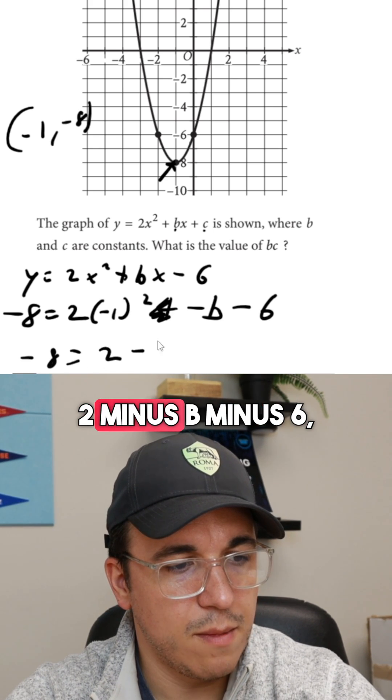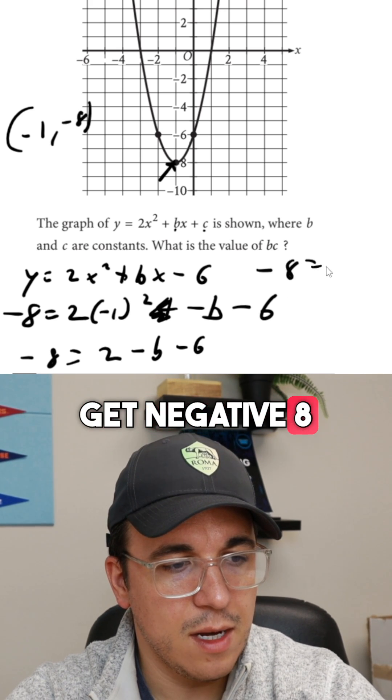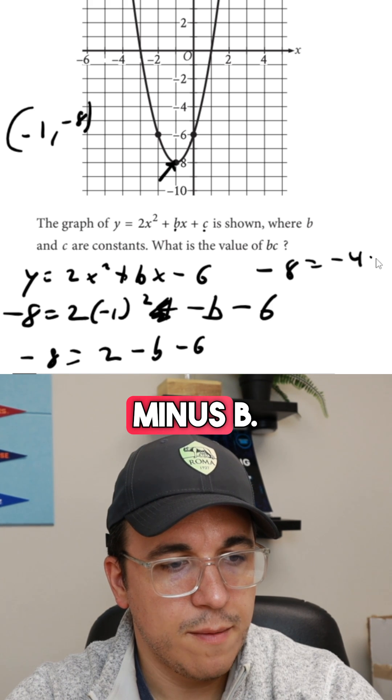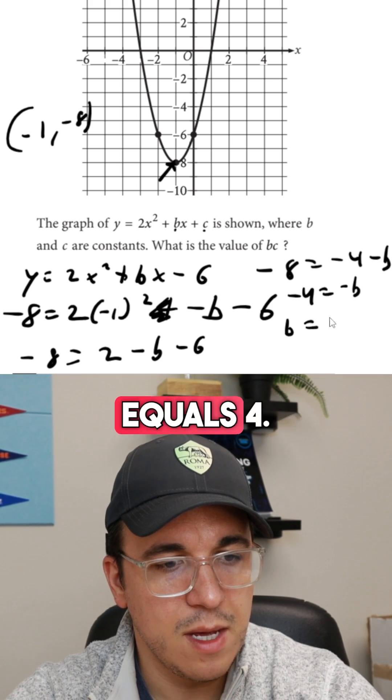Which then we would get negative 8 equals negative 4 minus b. So we get negative 4 equals negative b, b equals 4.